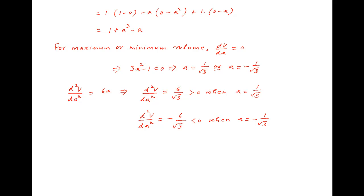Now the volume V is minimum when the second derivative is positive. Therefore the minimum volume is achieved when A is equal to plus 1 upon root 3, which is the required answer.